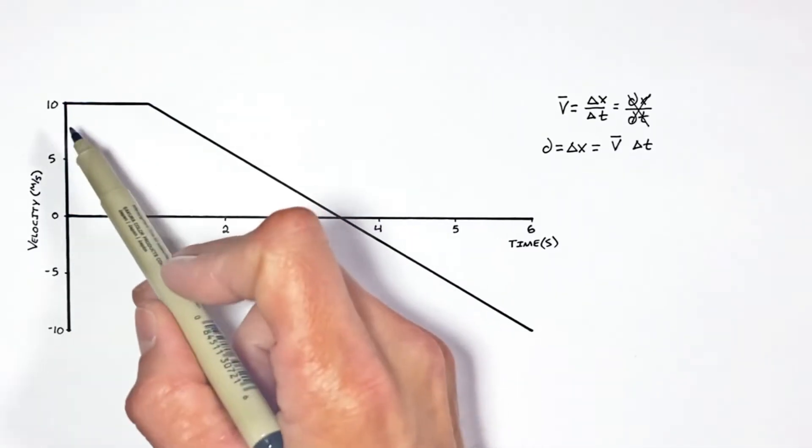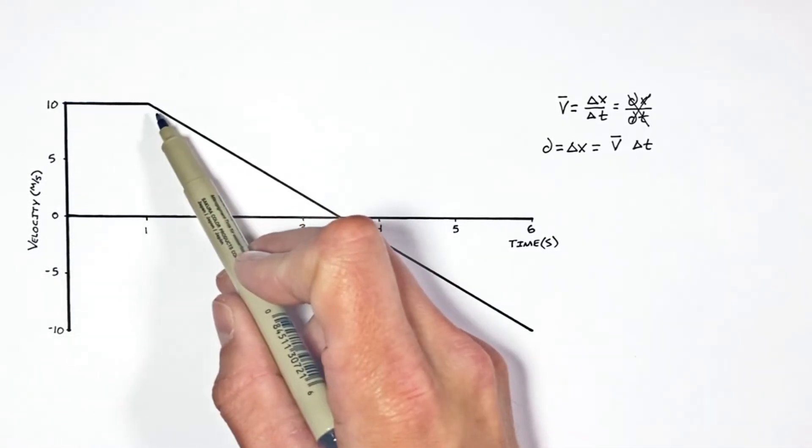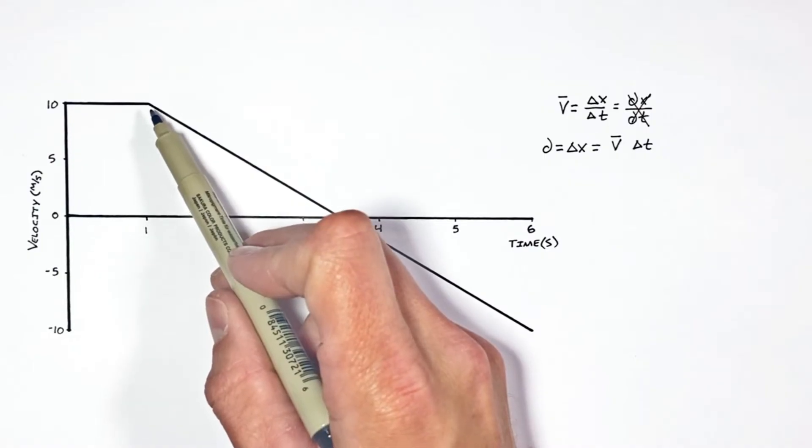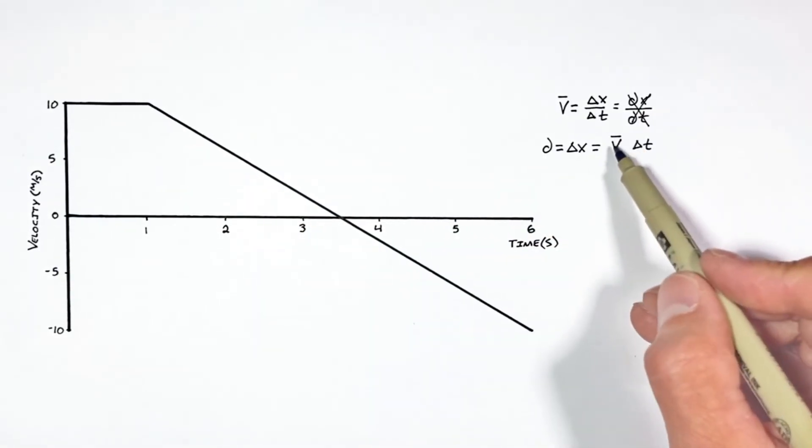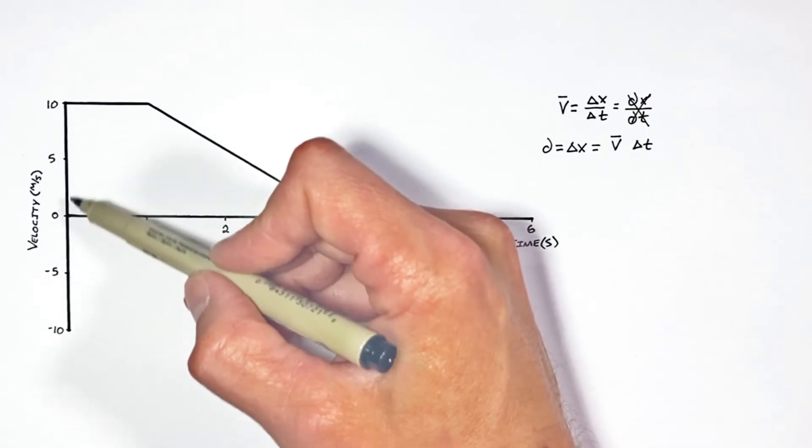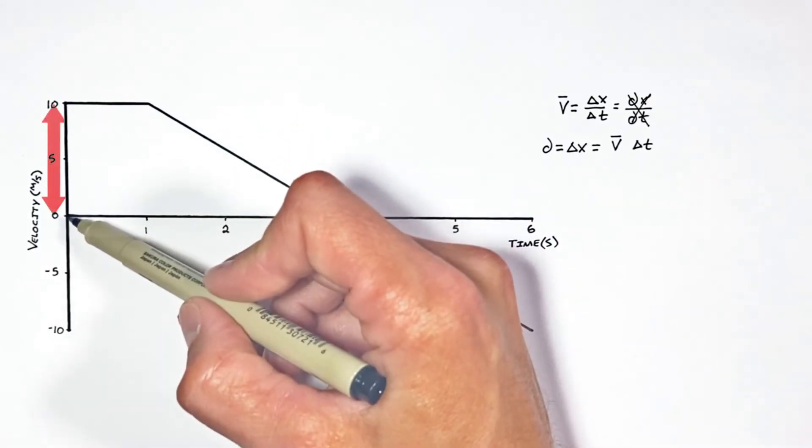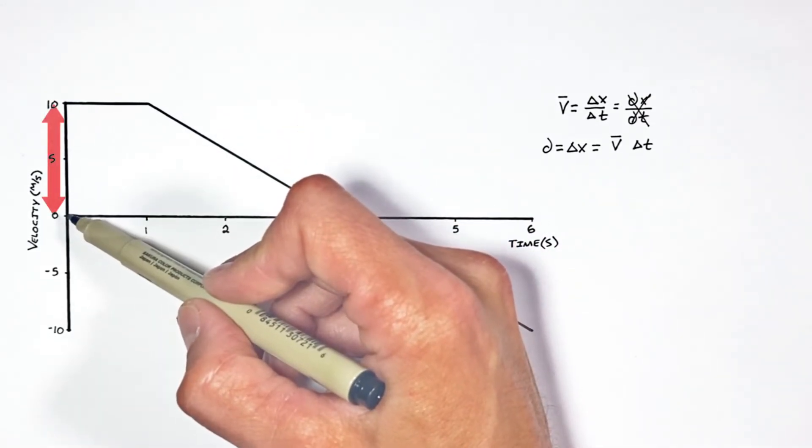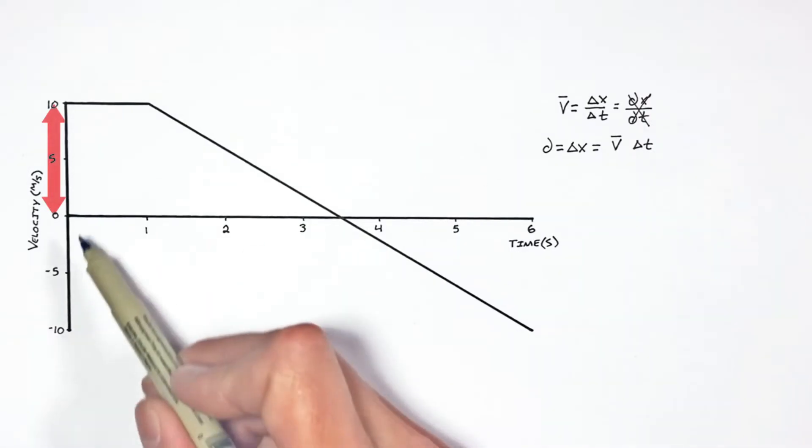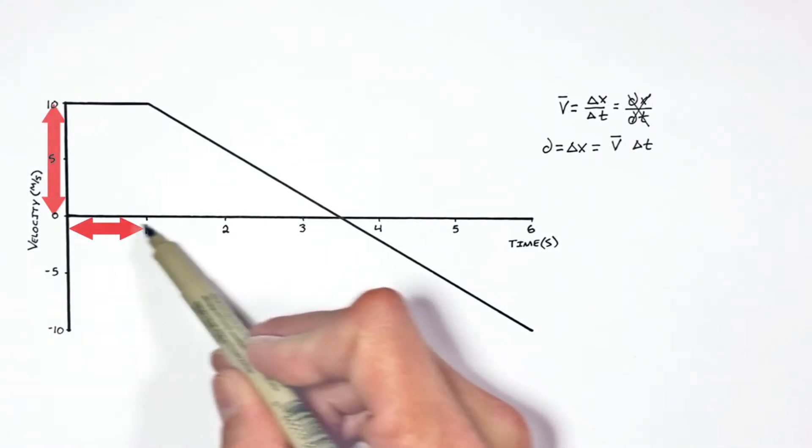You see, for the first second of this motion, this object is moving along at a constant 10 meters per second. So going back to the equation, the velocity is going to be 10 meters per second. That is this dimension right here on our graph. And the elapsed time is going to be one second. That's this dimension right along here.